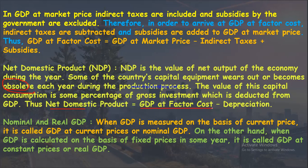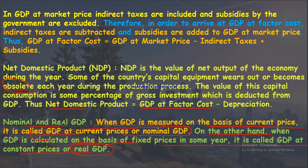Nominal and real GDP: when GDP is measured on the basis of current price, it is called GDP at current price or nominal GDP. When GDP is calculated on the basis of fixed price in some base year, it is called GDP at constant price or real GDP. These are very important from an MCQ perspective.